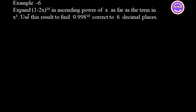This is the expansion of (1 minus 2x) the whole power 16. This is in ascending powers of x, up to the term in x squared. We need the first three terms and the first four terms.